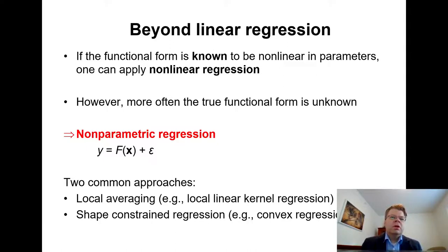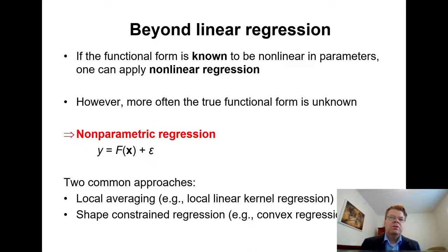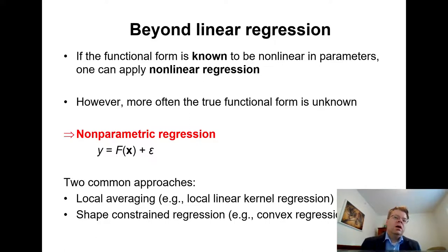In one of my most influential works, I proved formally that the optimal solution to the convex regression estimator is to fit a piecewise linear functional form. This piecewise linear functional form can be freely estimated from the data, so we don't need to specify in advance how many pieces there are or where the vertices are located. Even if we don't know the functional form, if it satisfies convexity or concavity, then it is useful to fit a piecewise linear functional form.